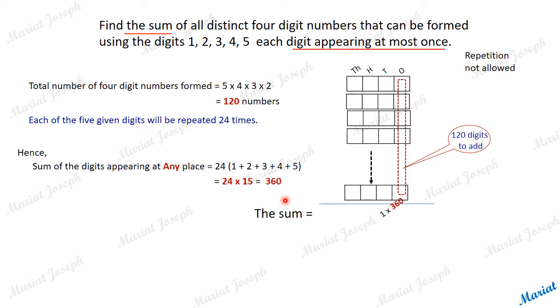So, each digit position will give 360 as the sum. The unit place will be 1 into 360, the 10th place will be 10 into 360, the 100th place will be 100 into 360, and the 1000th place will be 1000 into 360.